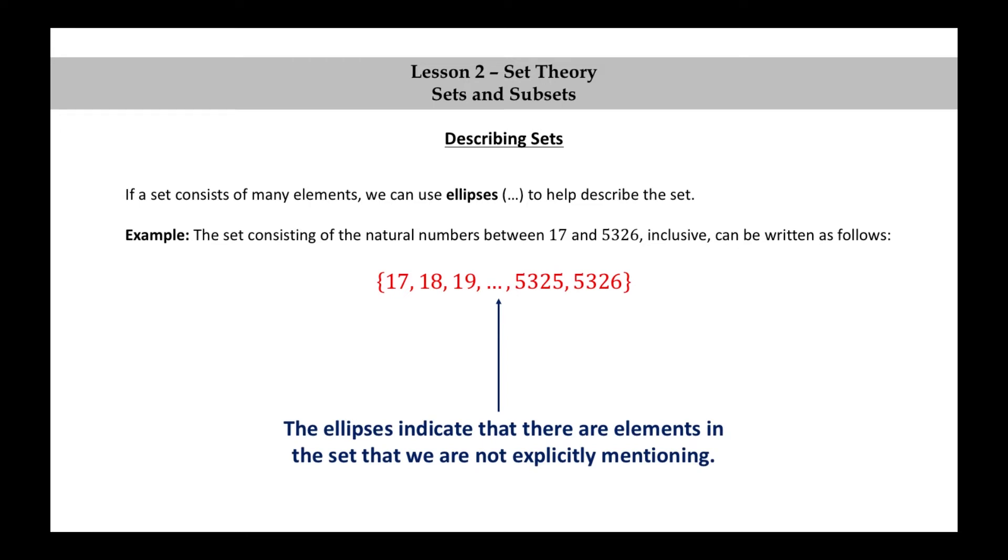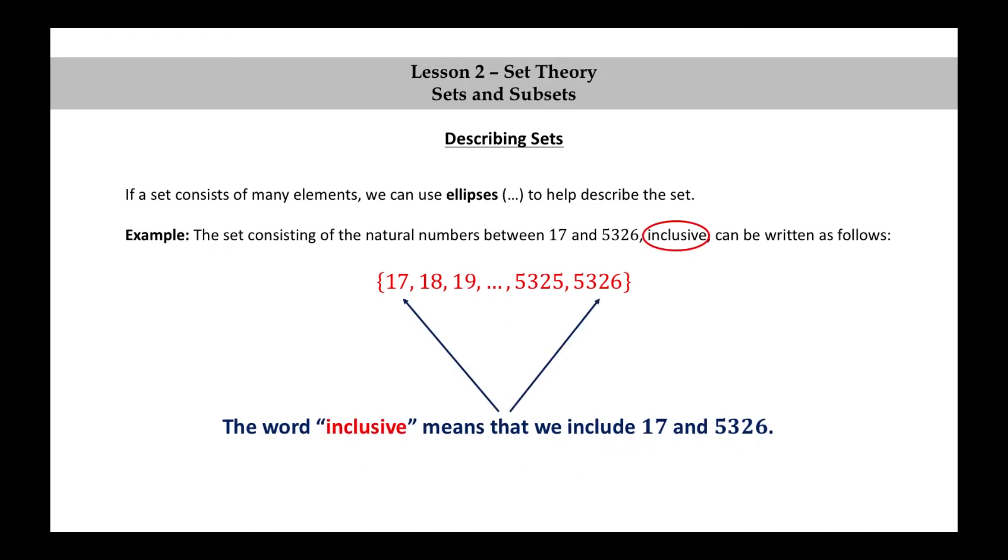The ellipses indicate that there are elements in the set that we are not explicitly mentioning. The word inclusive means that we include 17 and 5,326. If we didn't want to include those numbers, we would use the word exclusive.